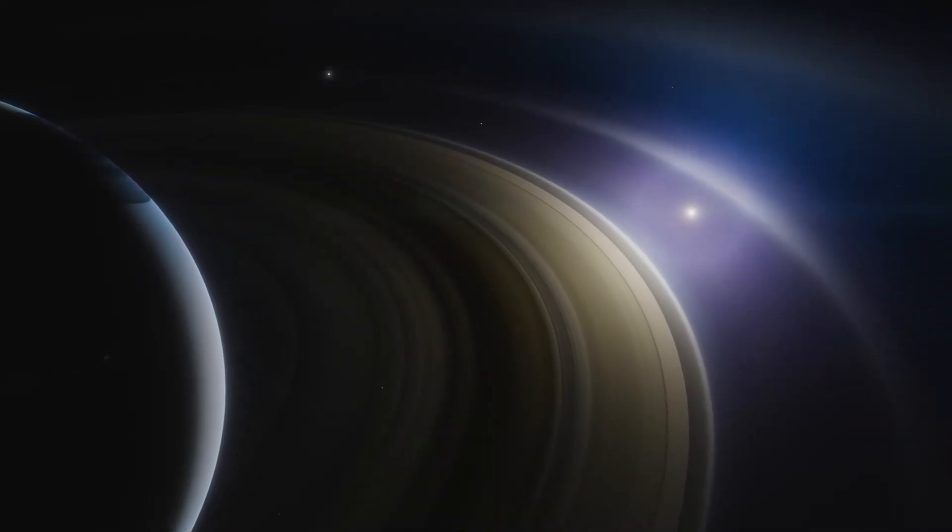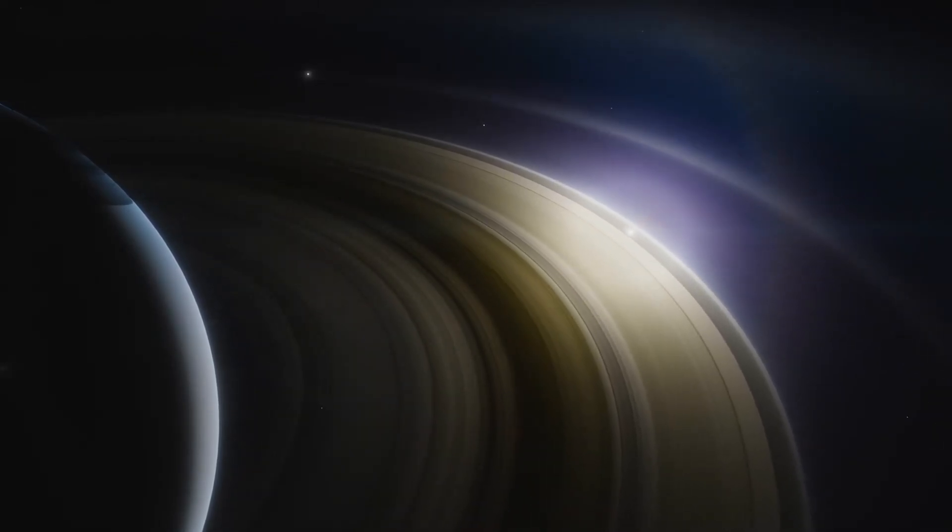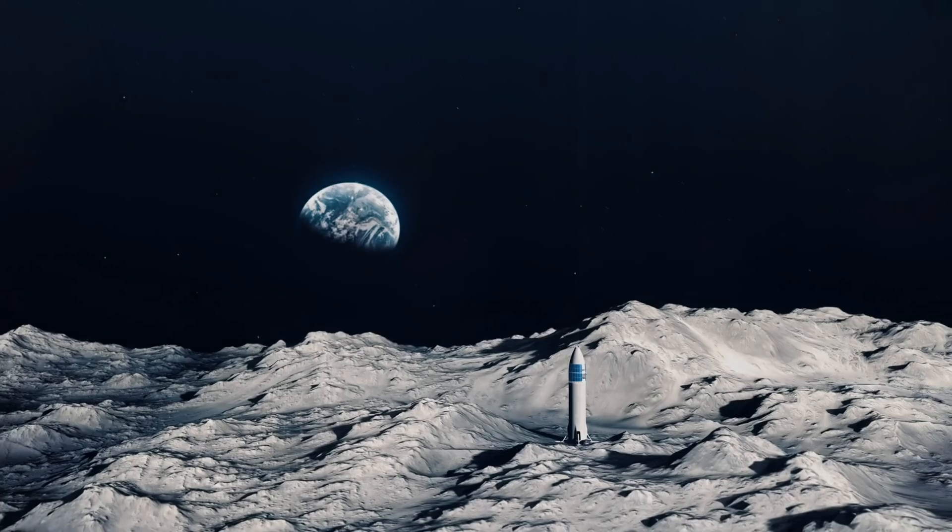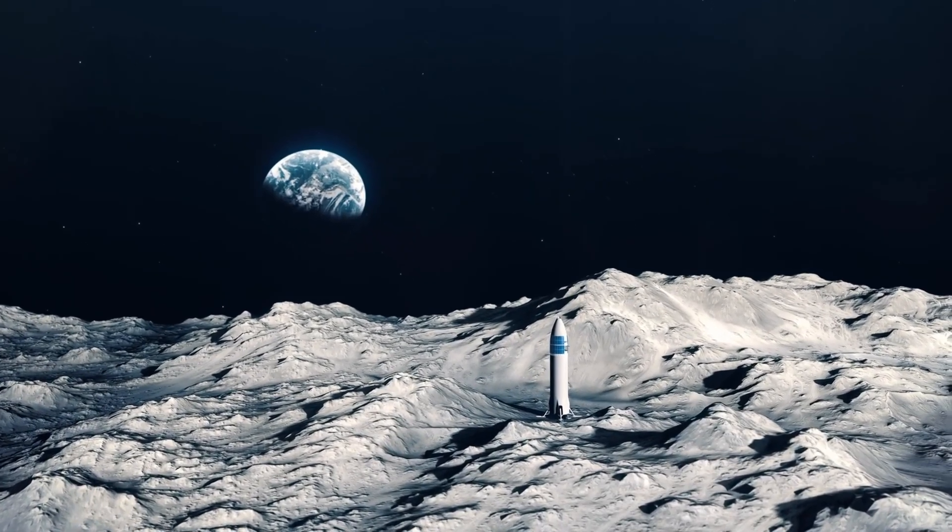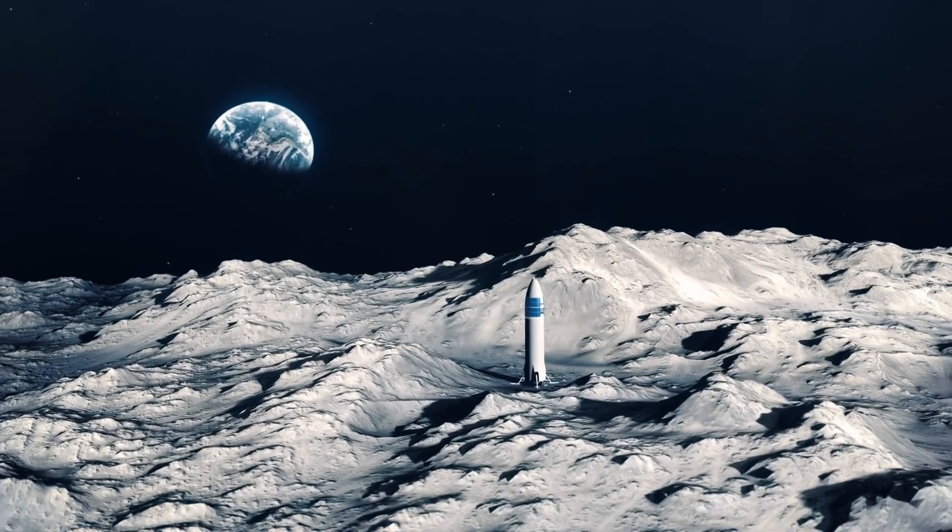Yet even the most conservative calculations confirm its enormity. If our sun were a marble, Stevenson 2-18 would be a sphere the size of a skyscraper. Its photosphere could swallow the orbits of Mercury, Venus, Earth, Mars, Jupiter and most of Saturn without noticing.